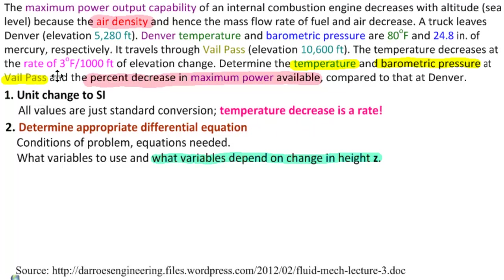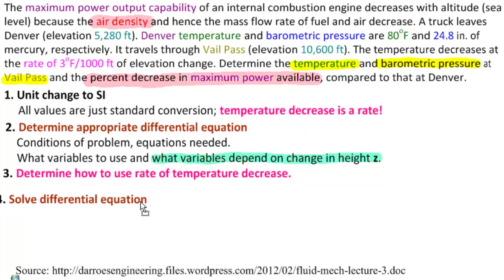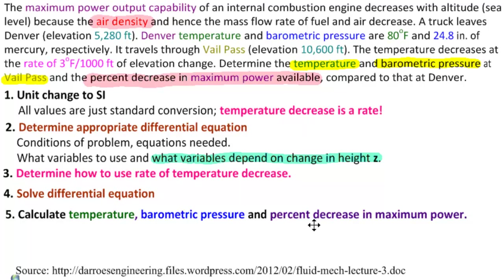We can see that temperature depends on height, so we need to know how to use that in the differential equation — this is the first time we'll do that. We determine how to use the rate of temperature decrease in the differential equation, then solve the differential equation. Finally, we calculate the things we need: temperature, barometric pressure, and percent decrease in maximum power, which is the percent decrease in air density.